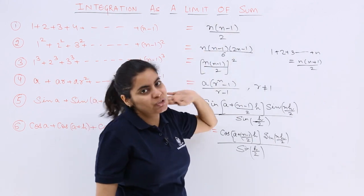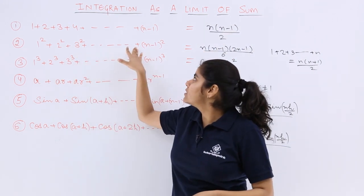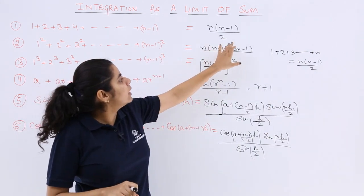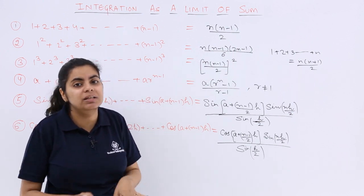So n minus 1, n upon 2. Similarly, you can derive from 1 square plus 2 square plus 3 square till n minus 1 whole square. It is n, n minus 1, 2n minus 1 upon 6. These all have to be learnt and memorized.